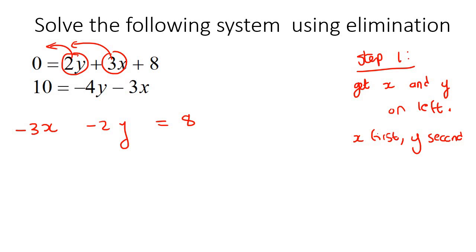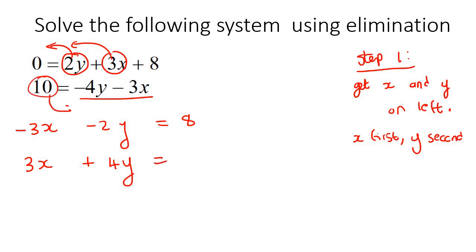Then you're going to do the same with the bottom equation. So you're going to take the 3x over, and then put the 4y over, and then take this 10 and put it on the other side, so that's actually going to become negative 10. So that's step one.